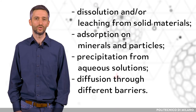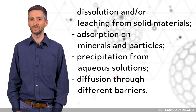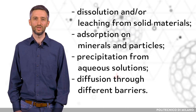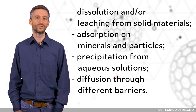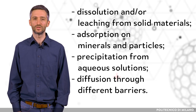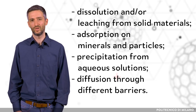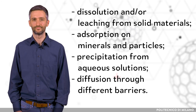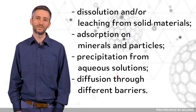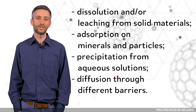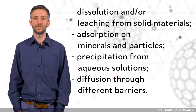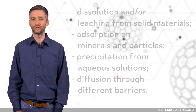Several physico-chemical processes can govern what will happen with radionuclides in contaminated areas, such as dissolution and/or leaching from solid materials, adsorption on minerals and particles, precipitation from aqueous solutions, and diffusion through different barriers. Radiochemists study these processes to be able to predict what will happen with radionuclides in specific environmental conditions.